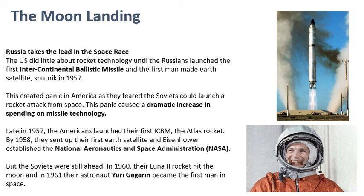Apart from the first ICBM, Russia also sent the first satellite into space — called Sputnik — in 1957. Those were two early blows by Russia in the space race, and this created panic in America as they feared the Soviets would be able to launch a missile to hit them. As a result, America really sped up their spending and research on missile technology, and late in 1957 the Americans launched their own ICBM called the Atlas rocket.